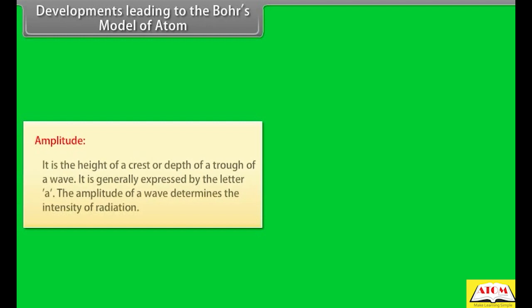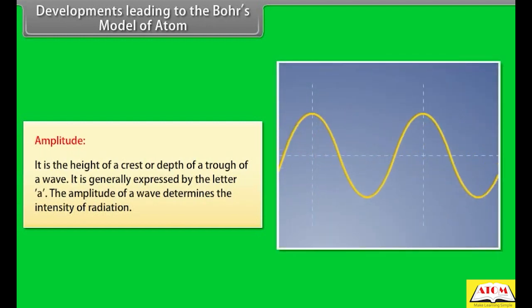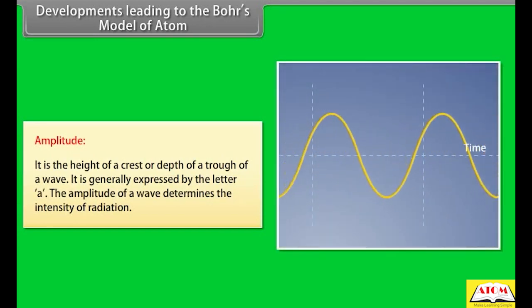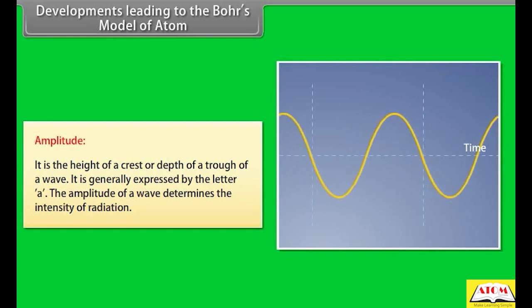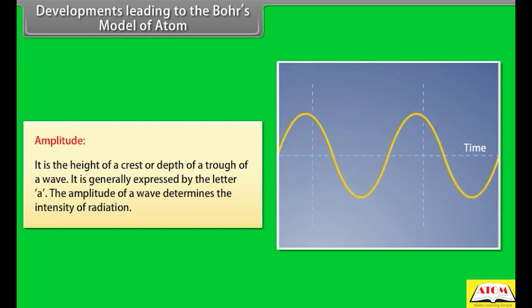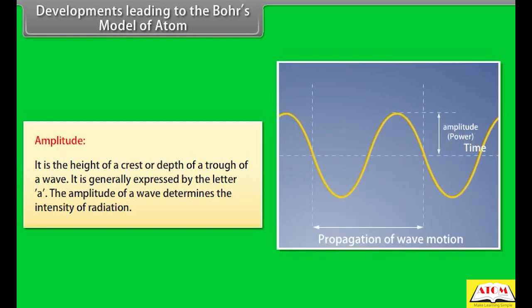Amplitude: It is the height of a crest or depth of a trough of a wave, generally expressed by the letter A. The amplitude of a wave determines the intensity of radiation.